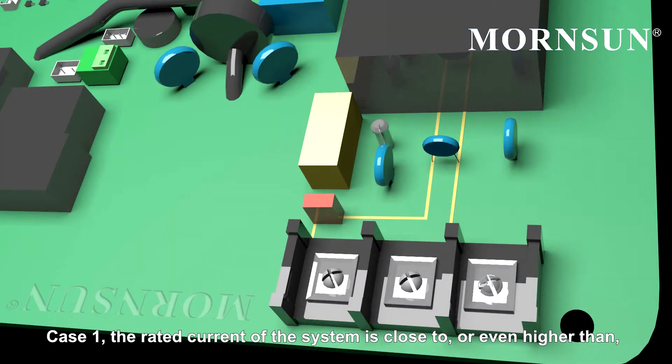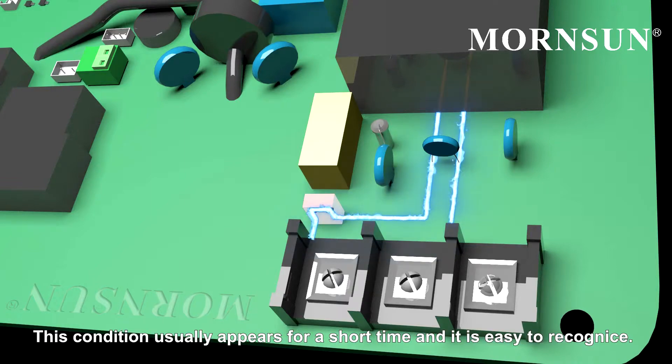Case 1: The rated current of the system is close to or even higher than the fuse's rated current. This condition usually appears for a short time and is easy to recognize.